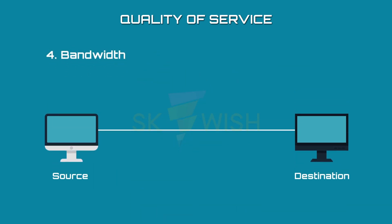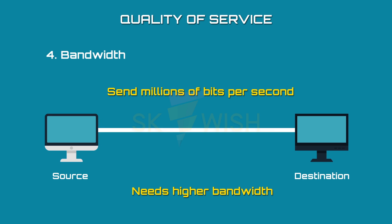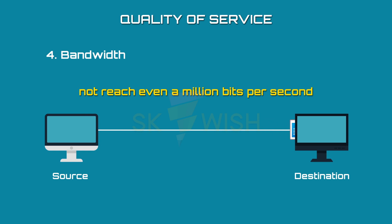Bandwidth: a network needs appropriate bandwidth for a specific application. For example, video conferencing needs to send millions of bits per second, which requires higher bandwidth. While file transfer may not reach even a million bits per second, a lower bandwidth for this application is acceptable.